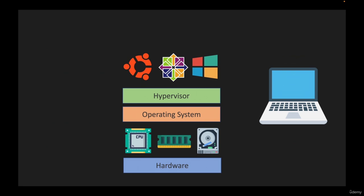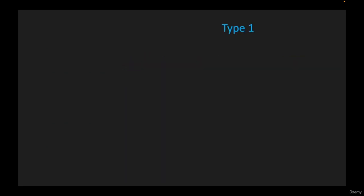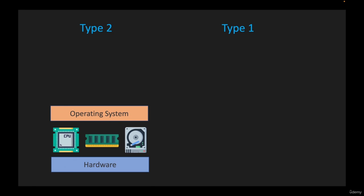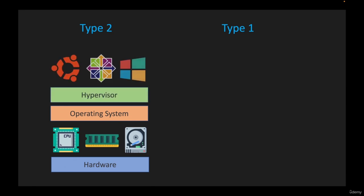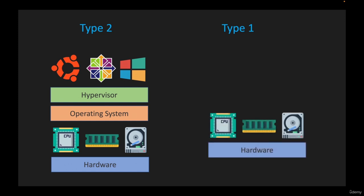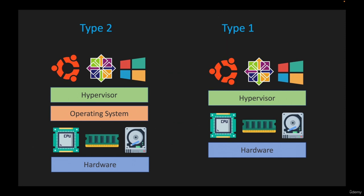With virtualization, you have a virtualization tool on top of the operating system, and on top of that tool you can install CentOS, Ubuntu, Windows, or whatever operating system you want. You don't need separate hardware for each operating system. We call this virtualization technology a hypervisor. There are two types of hypervisors: Type 1 and Type 2. Type 2 is what I just described — you have hardware, then a host operating system, then the hypervisor, and then different operating systems on top. In a Type 1 hypervisor, the hypervisor is installed directly on the hardware, controlling hardware resources directly without needing a host operating system. This is also called a bare metal hypervisor.